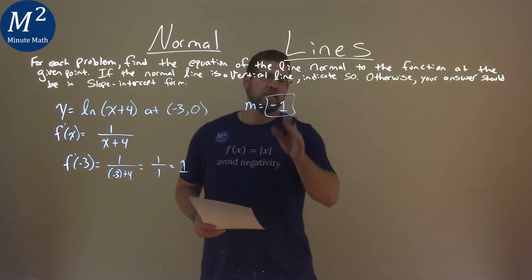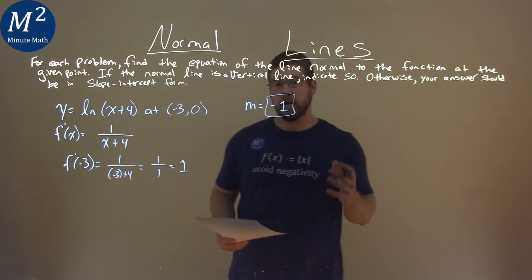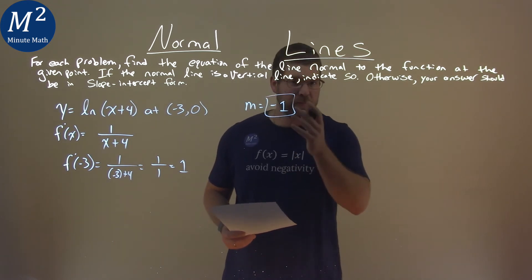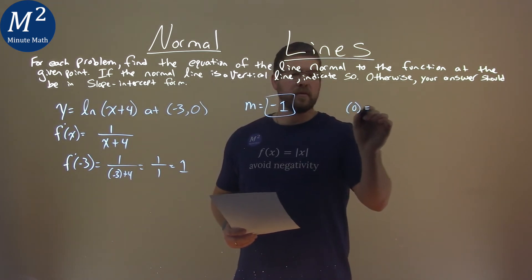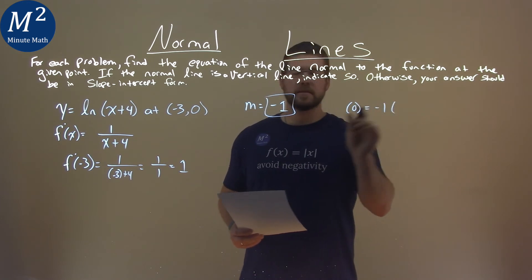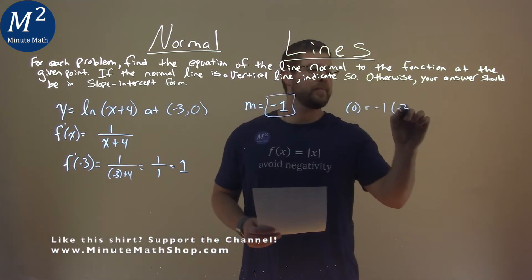All right. So we have our slope here. We need to find our y-intercept. Now it's just algebra. Here's the easy part. Our y value is 0 equals our slope negative 1 times the x value negative 3 plus b.